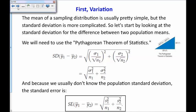The mean of a sampling distribution is usually pretty simple, but the standard deviation is more complicated. So I want to start by looking at the standard deviation for the difference between two population means. For that, we have to use the Pythagorean theorem of statistics, which is the square root of one of them squared plus the other one squared. We don't usually know the population standard deviation, so we estimate it using our sample standard deviations and use a standard error of the square root of s sub 1 squared over n1 plus s sub 2 squared over n2.